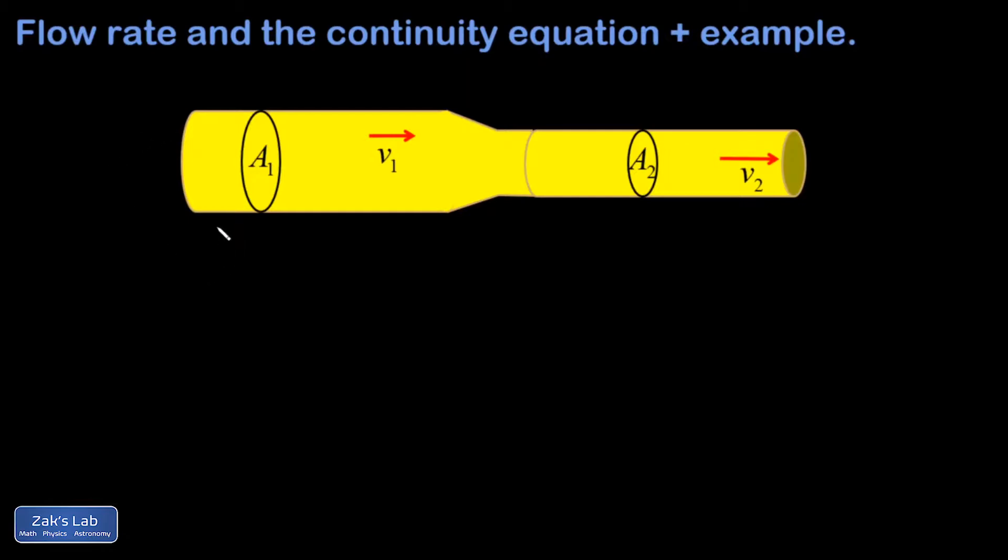This result rests on an important assumption, and the assumption is that the fluid in the pipe, a liquid in this case, is nearly incompressible. Liquid is a type of fluid, so is a gas, but gases are highly compressible, so we wouldn't try this with a gas.